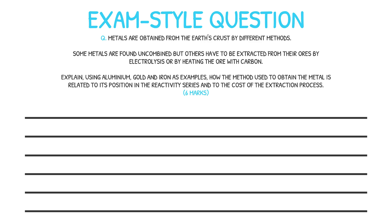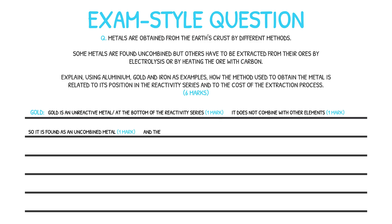Starting with gold: gold is the least reactive of the three metals and is found at the bottom of the reactivity series. Gold is in fact a native metal, meaning it does not combine with other elements and is found in its natural state. Therefore the cost to recover gold is very low.